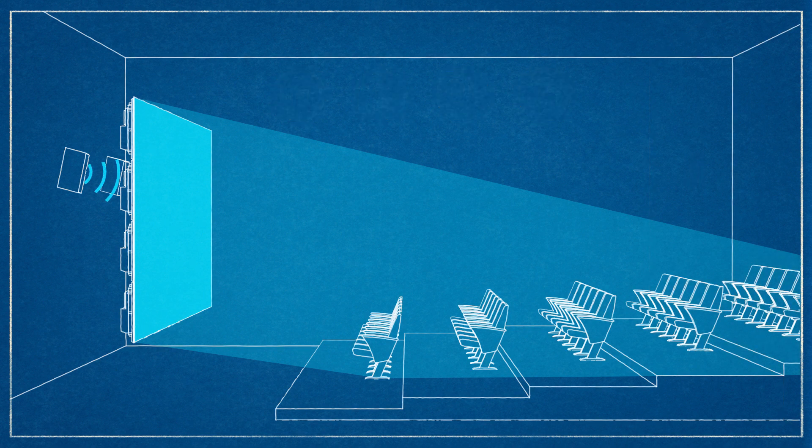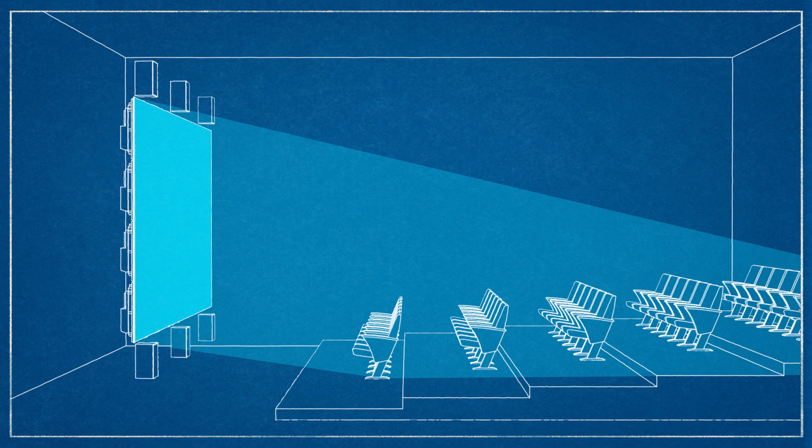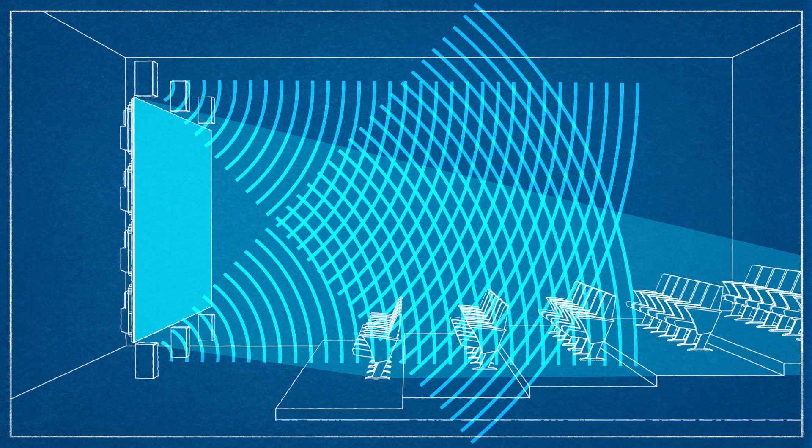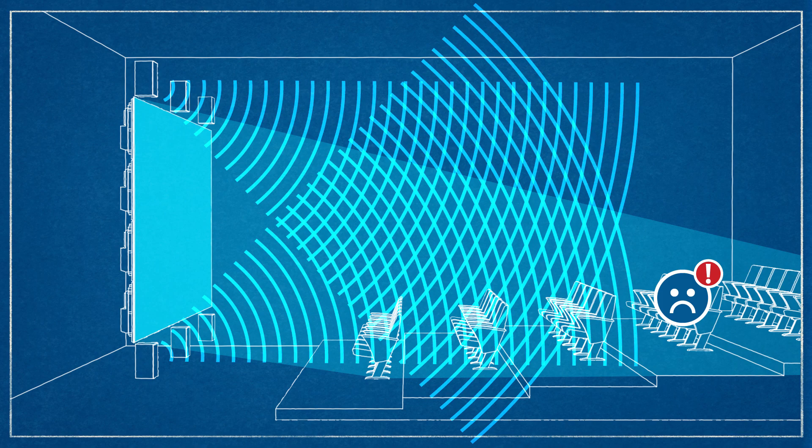However, because direct-view displays are solid, loudspeakers cannot be placed behind them. Some have attempted to solve this problem by placing loudspeakers around the display, resulting in distracting localization shifts and inconsistent coverage, delivering a poor movie-going experience.